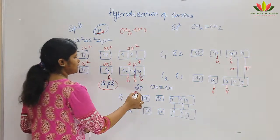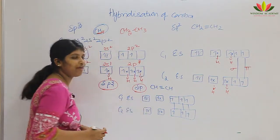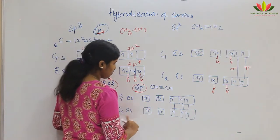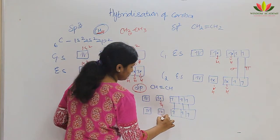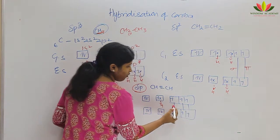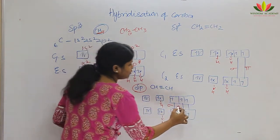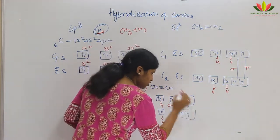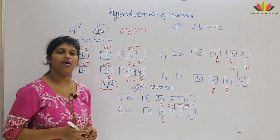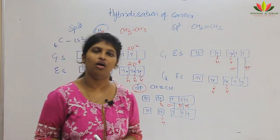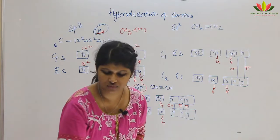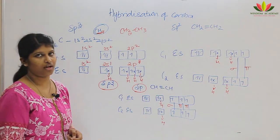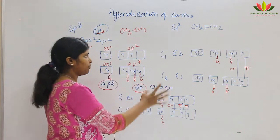For sp hybridization, carbon has a triple bond with another carbon. Both carbons go to the excited state. The first bond formed between carbon and carbon is a sigma bond, the second bond is a pi bond, and the third bond is also a pi bond. So the second and third bonds formed over the sigma bond are both pi bonds. The sigma bond is a very strong bond compared to the pi bond.